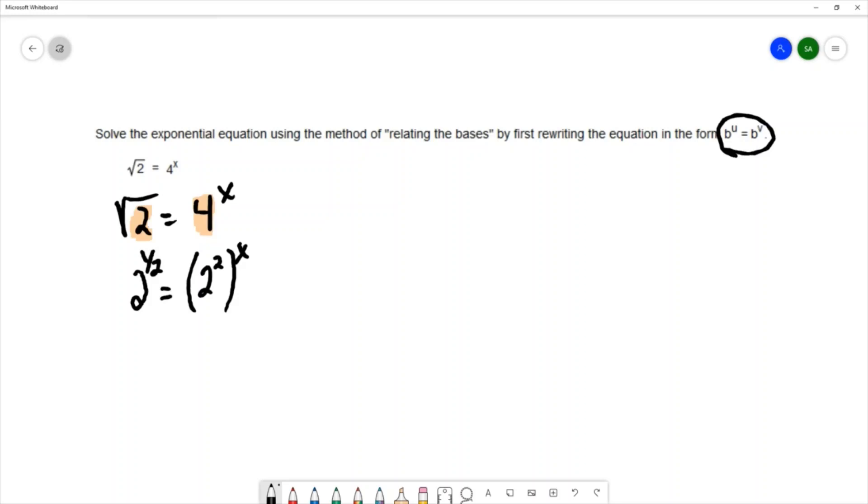On the right hand side I'm going to use a property of exponents called the power rule. And the power rule goes like this: if you have a base to a power and then that whole thing raised to a power, the way we simplify is to multiply the powers together.